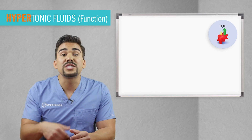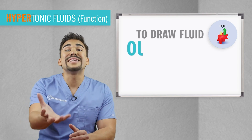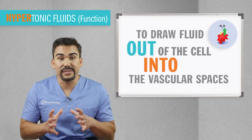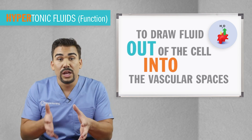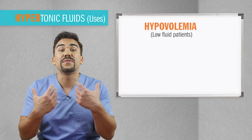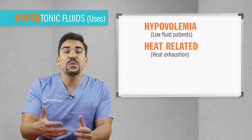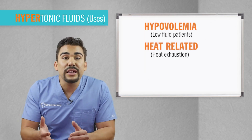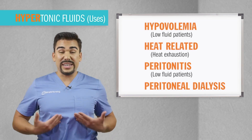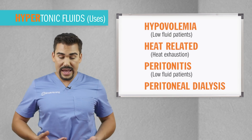So what is the function of these solutions and why do we use them in patients? The main function is to draw fluids out of the cell into the vascular spaces — basically inside the bloodstream. We use them for hypovolemic patients with low fluid, heat-related disorders like heat exhaustion, and even peritonitis — an inflammation of the peritoneal cavity of the abdomen.